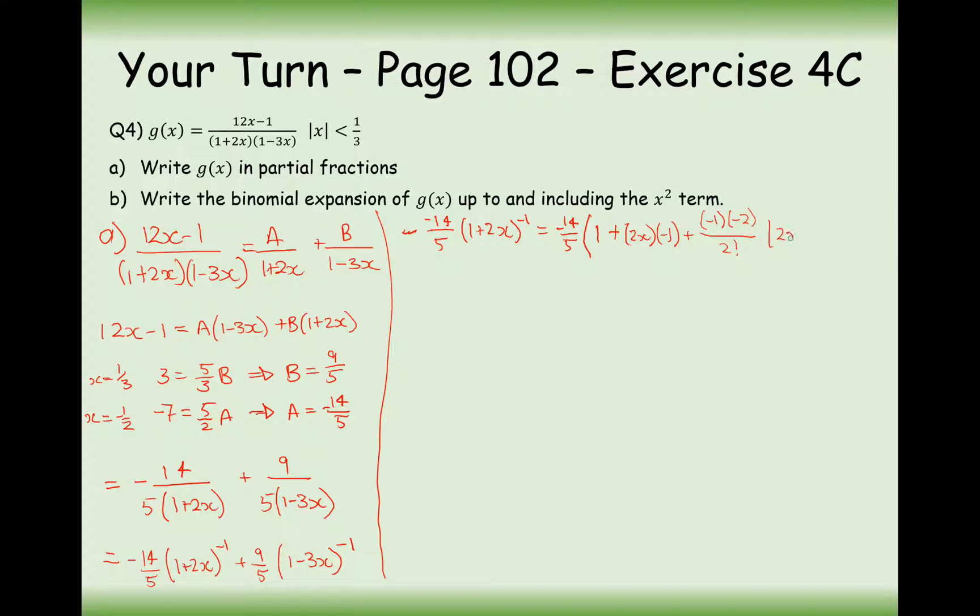That would be 2x squared, actually. And we're only looking to go up to the x squared term, so we'll leave it there. So expanding these brackets, we're going to get minus 14 over 5.